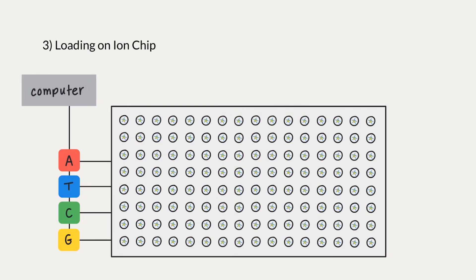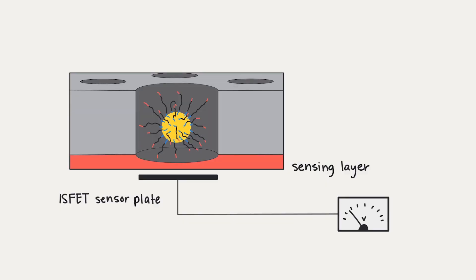Then, we break the emulsion and load the beads onto a chip. Each ion chip contains millions of microwells which will each hold a single bead. Later, we'll flood the microwells with nucleotides, one type at a time. And this is what a single well looks like. This chip has a semiconductor membrane that will detect when a nucleotide is incorporated because it'll detect the hydrogen ion.